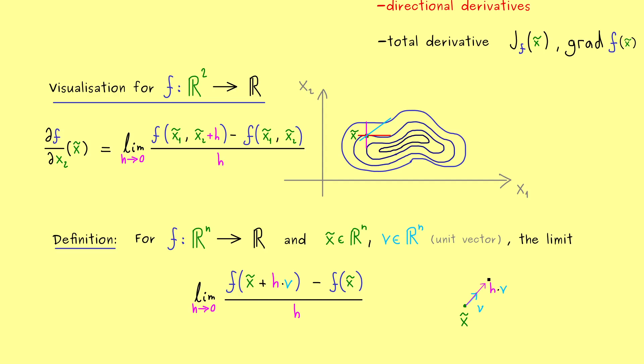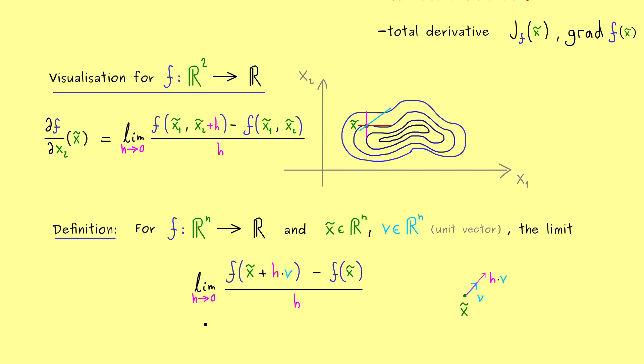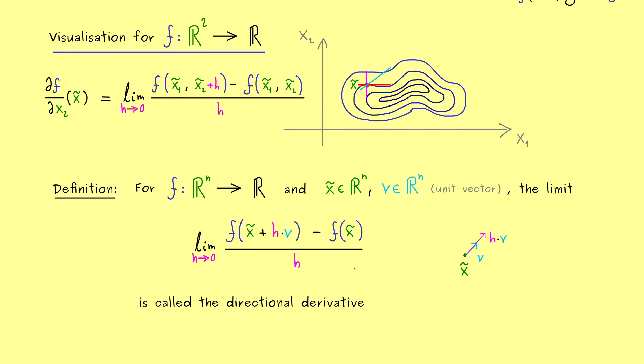The last thing we have to do now is to look if this limit, the limit h to 0, actually exists. If it does, we have our directional derivative. More precisely, we would say it's the directional derivative of the function f along the vector v at the point x̃.